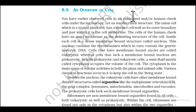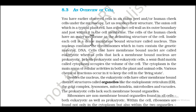Section 8.3: An Overview of the Cell. The onion cell, a typical plant cell, has a distinct cell wall as its outer boundary, and just within it is the cell membrane. The cells of the human cheek have an outer membrane as the limiting structure. Inside each cell is a dense membrane-bound structure called the nucleus, which contains chromosomes and in turn the genetic material DNA. Cells with membrane-bound nuclei are called eukaryotic, while cells that lack a membrane-bound nucleus are prokaryotic.